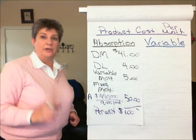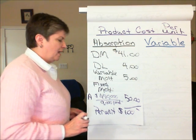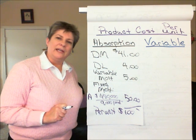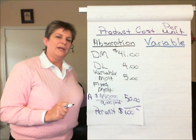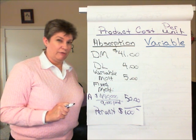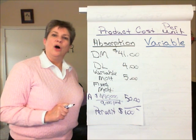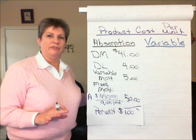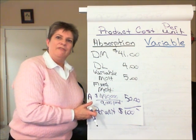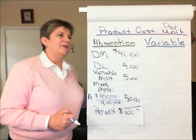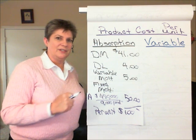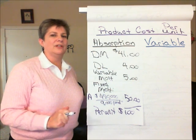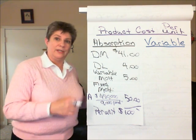One word of caution before we go on to calculating cost of goods sold. This illustration violates some of the principles we learned for calculating predetermined overhead in earlier videos. We said that in calculating predetermined overhead rates, we should use, at minimum, a one-year level of production and cost in order to smooth out seasonal fluctuations. Here we're calculating fixed overhead per month just to simplify the data and illustrate the difference between absorption and variable costing. We should still follow the same principles for calculating predetermined overhead that we learned in earlier videos.